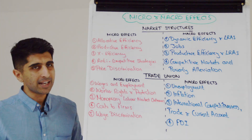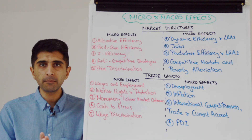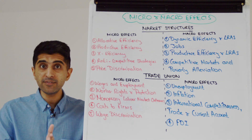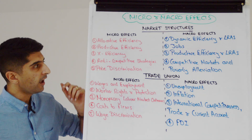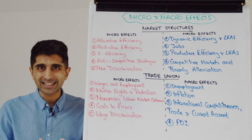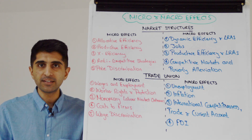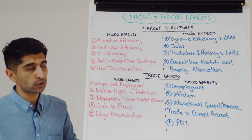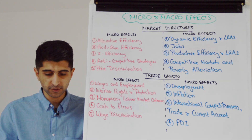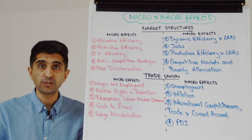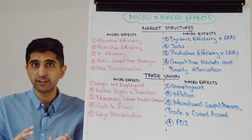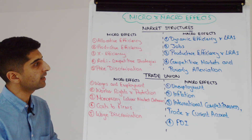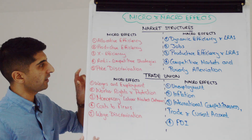We can talk about how in many concentrated markets like monopoly, oligopoly, and maybe even in certain contestable markets, firms will act anti-competitively using anti-competitive strategies — whether that's mergers, predatory pricing, limit pricing, flooding the market, or heavy advertising. That's a micro effect.